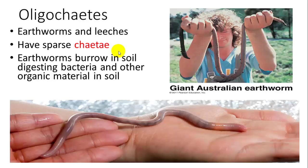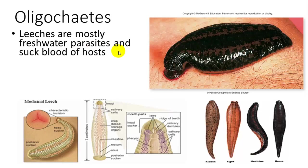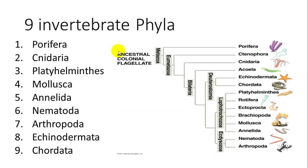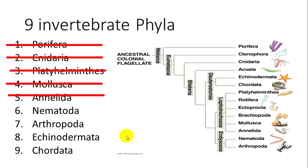Oligochaetes (oligo = few) have much fewer chaetae and include earthworms and leeches. Earthworms burrow in soil. Leeches are parasitic and suck blood from animals including humans; they're mostly freshwater, secrete an anesthetic so you can't feel them, and also secrete anticoagulants so blood keeps flowing while they feed.